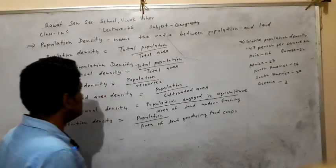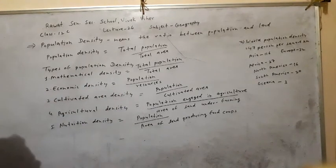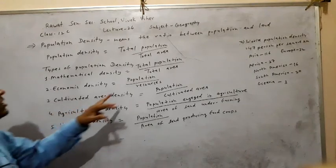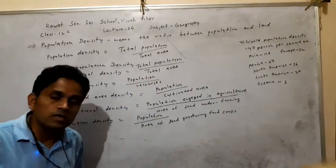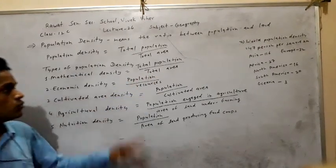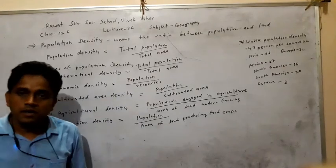Here is the formula for mathematical density: total population divided by total area.